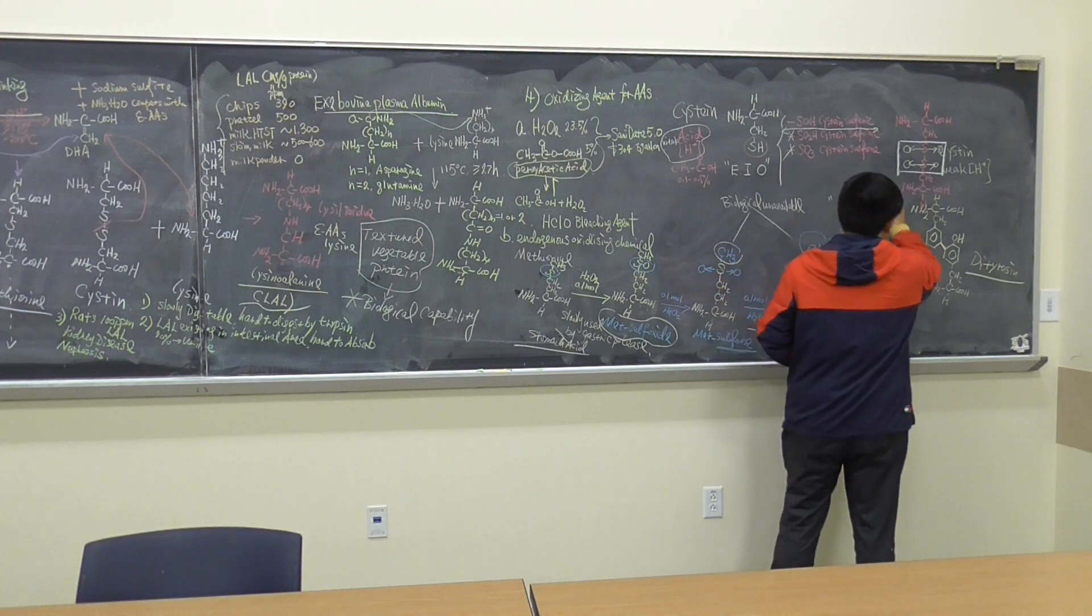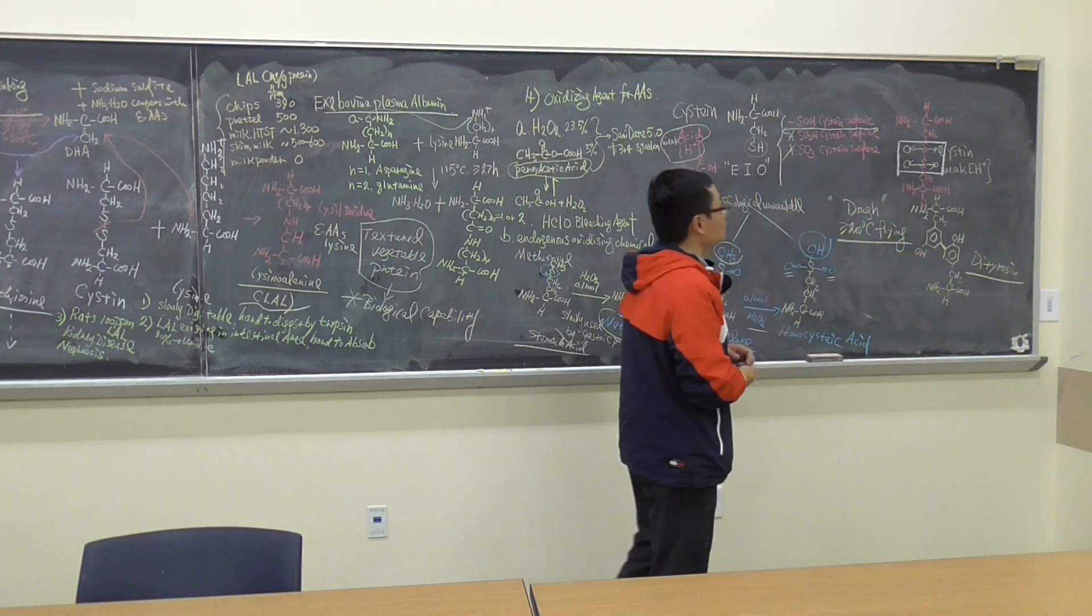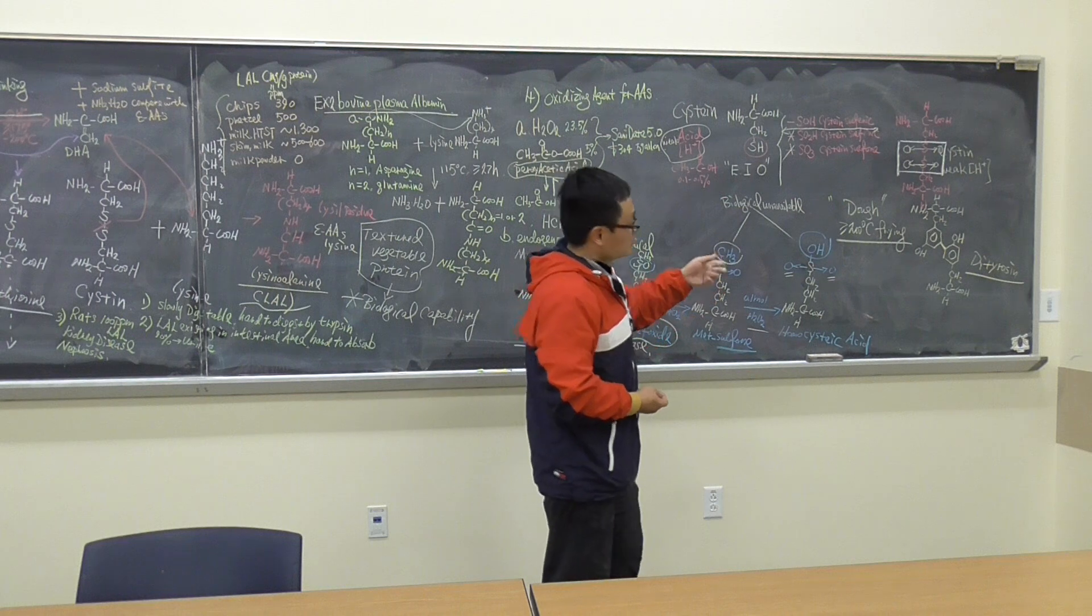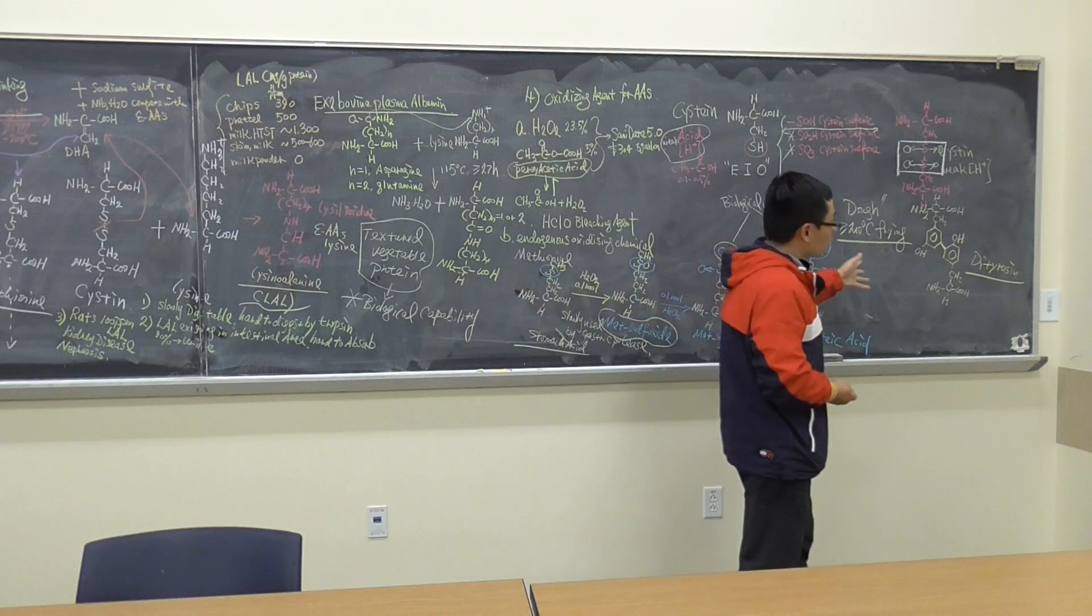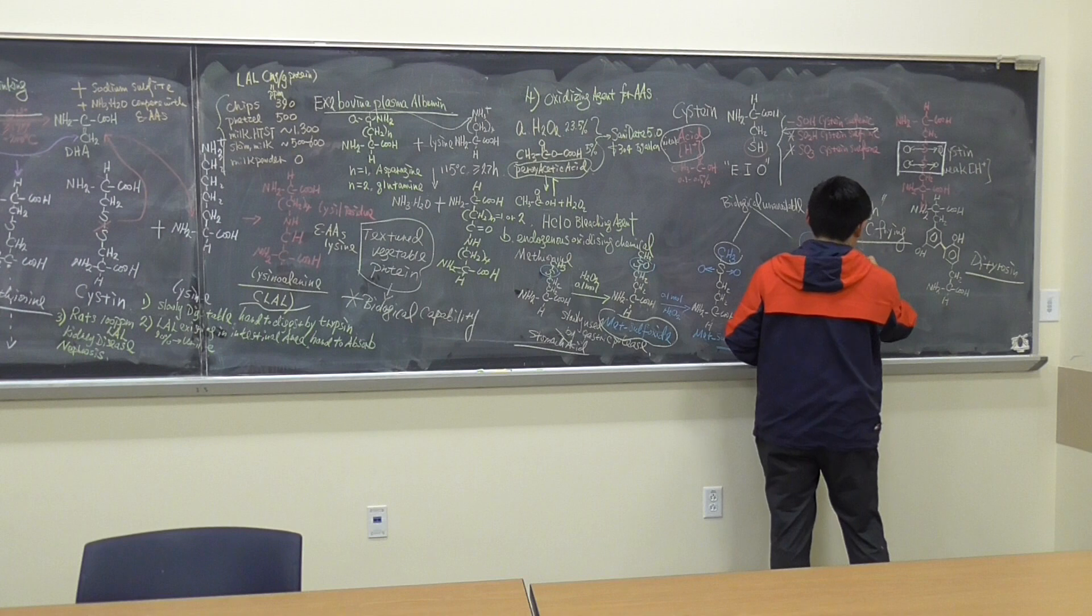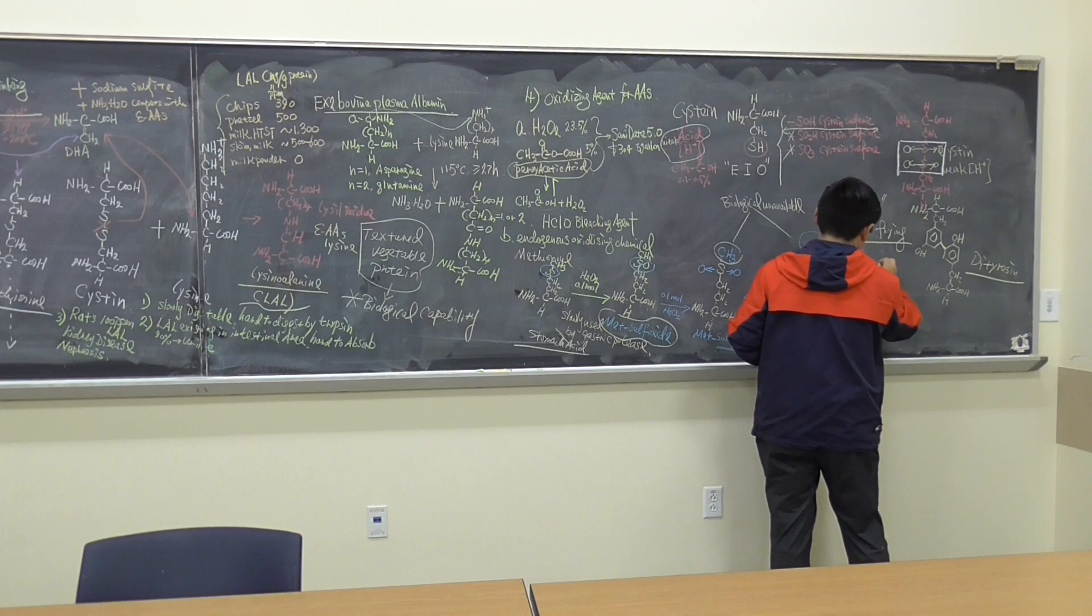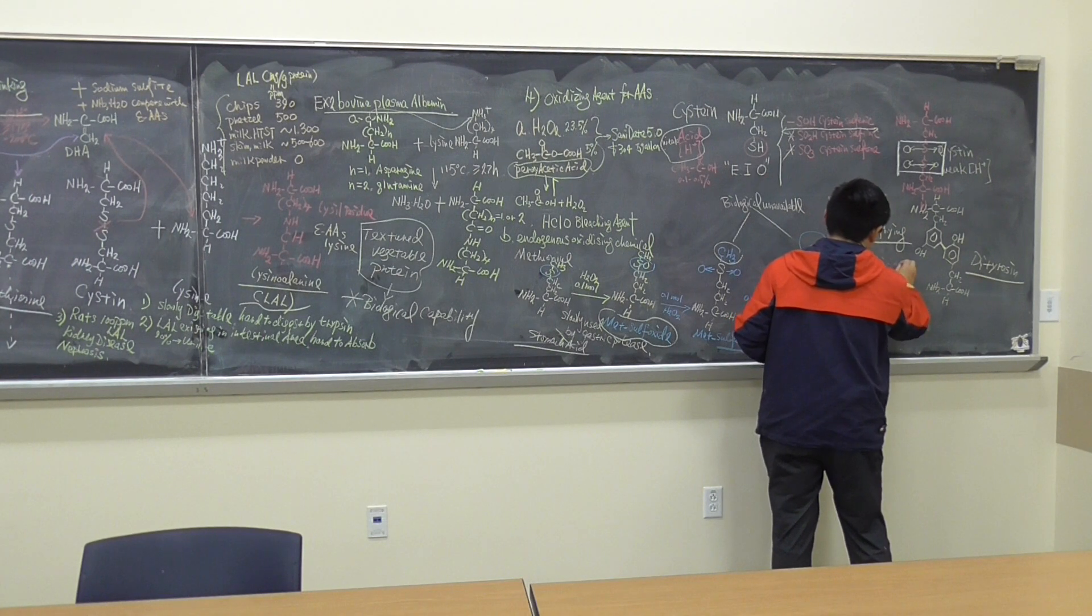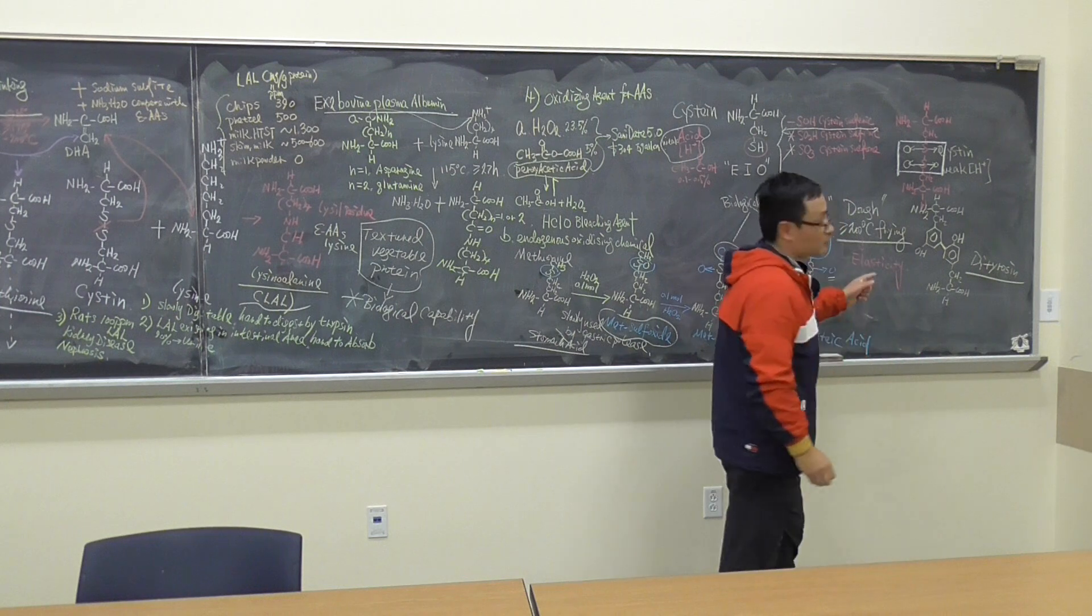So this is just to give you an example. For the dough, the di-tyrosine, it is an oxidizing product, but this is actually really good, because it gives you elasticity. So that really helps you for that.